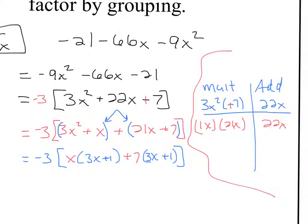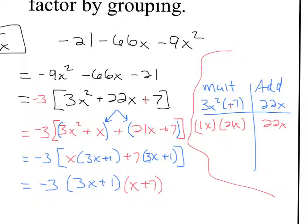At this point there are two terms inside the brackets. The first term has factors of x and (3x + 1); the second term has factors of 7 and (3x + 1). The GCF of those two terms is (3x + 1). Continuing to bring down the original GCF of negative 3, I factor out (3x + 1) from both terms, and what remains is (x + 7). This is fully factored: negative 3 times (3x + 1) times (x + 7).